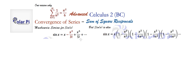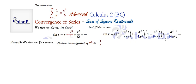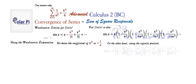The Maclaurin series for sine and the infinite product expression are the same. That gives us an idea: what if we concentrate on the coefficient of x cubed? We know that using the Maclaurin series, the coefficient of x cubed is negative one over three factorial, which is negative one over six. What's the coefficient of x cubed in this other expression of sine?